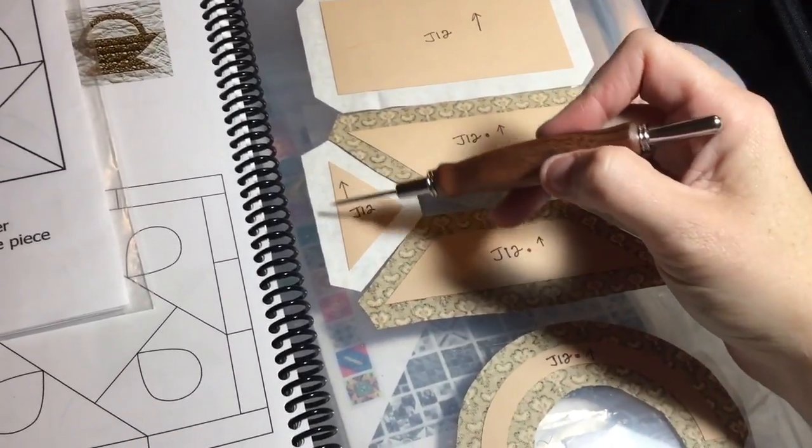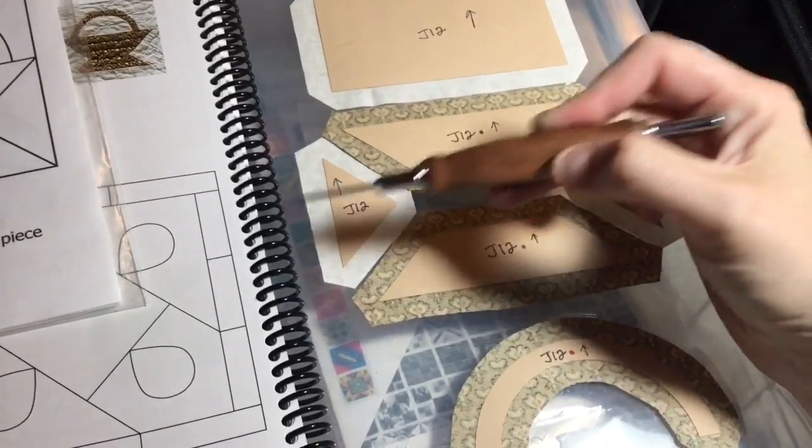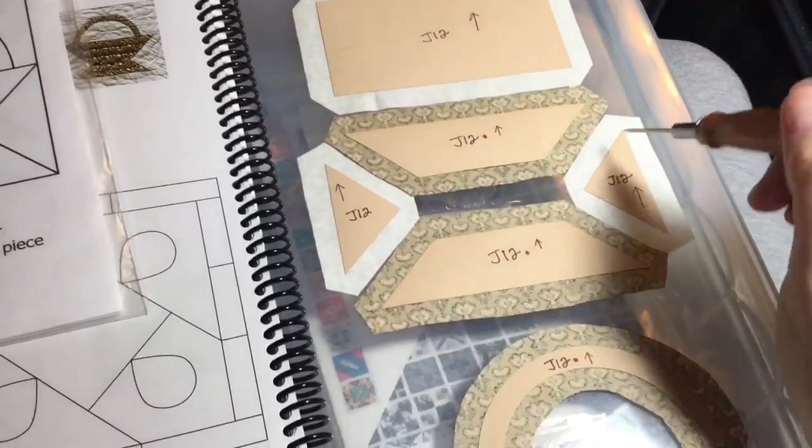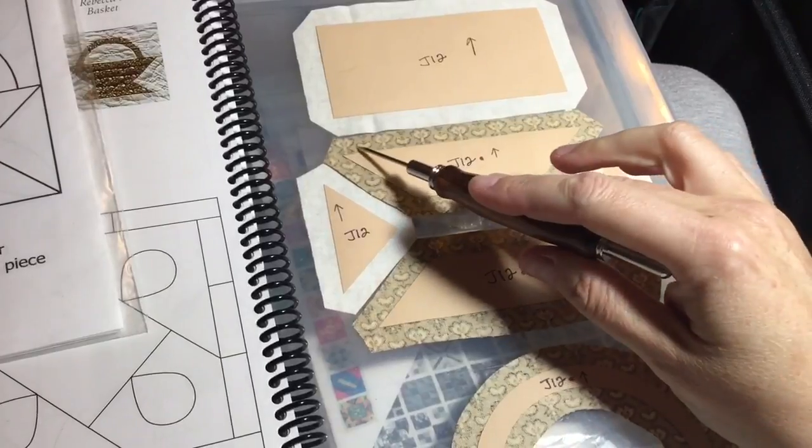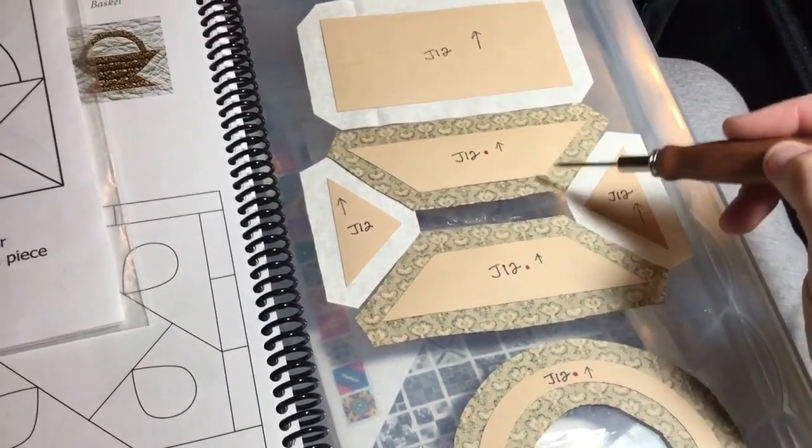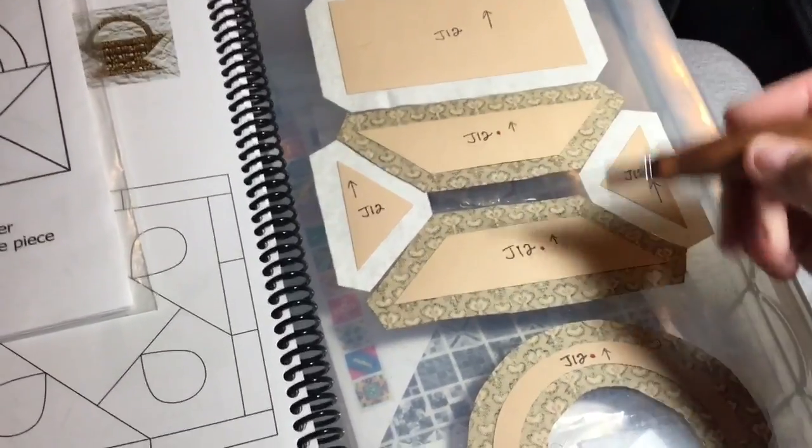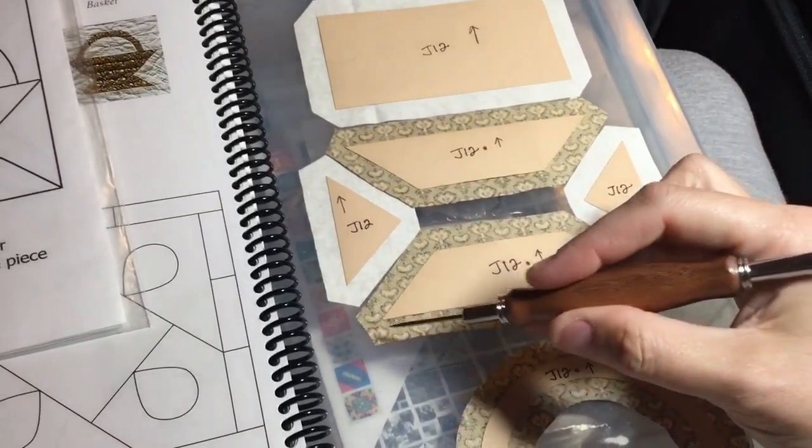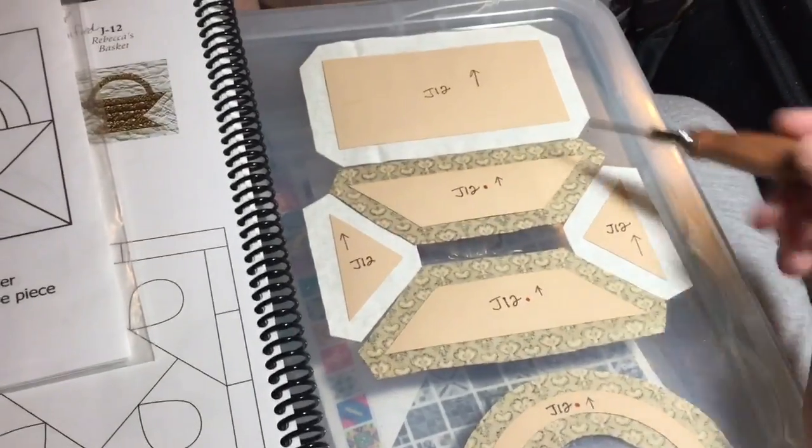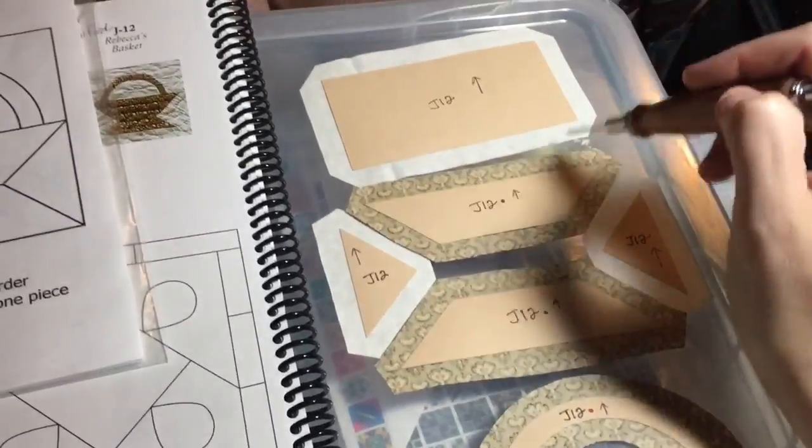These are going to be basted. I'm going to baste this side first and then this way the tags are going to go out. Same thing here, and then this is going to be basted short sides and then opposite long sides so that way I can try to maintain my points as best as possible. This I'm just going to do opposite sides and then opposite sides.